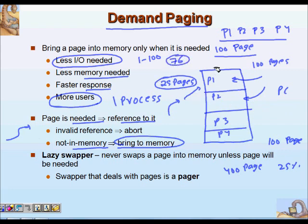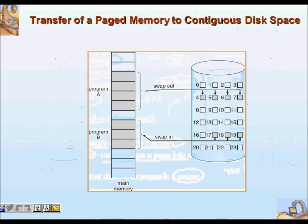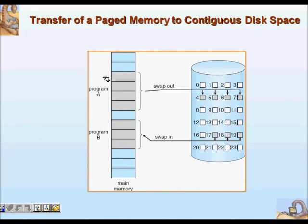What we have is a lazy swapper — laziness is sometimes good. The operating system never swaps a page into memory unless that page will be needed. This swapper is called a pager because we are swapping pages. In the main memory, program A is running with four pages and program B is running with three pages, and additional pages remain on disk. We may swap out a whole process and swap in a new one, or just swap individual pages.